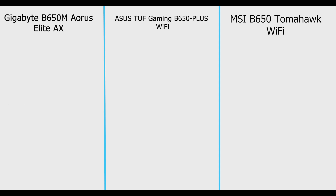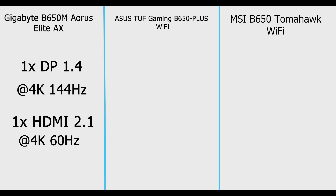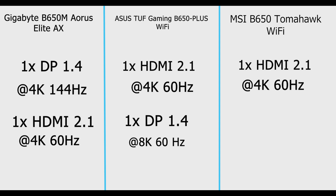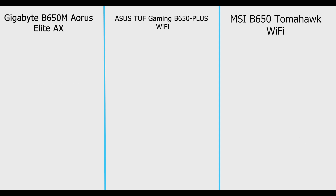For display outputs, Gigabyte has one DisplayPort supporting up to 3840x2160 at 144 Hz and one HDMI port supporting up to 4096x2160 at 60 Hz. ASUS has one DisplayPort 1.4 supporting up to 8K at 60 Hz and one HDMI 2.1 port supporting up to 4K at 60 Hz. MSI supports HDMI 2.1 with HDR at max 4K 60 Hz and DisplayPort 1.4 at max 8K 60 Hz.